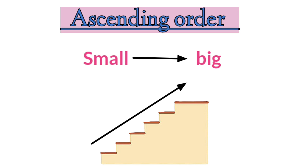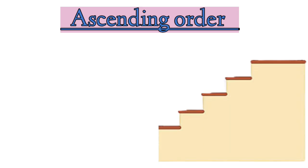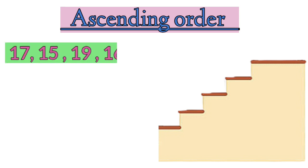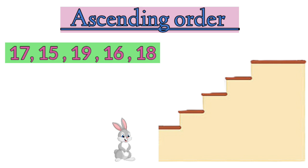Children, always remember that in ascending order the numbers always keep on increasing. Look at these numbers: 17, 15, 19, 16, 18. They are not in ascending order. Mr. Bunny wants to go up and get a carrot, but for that the numbers should be arranged in ascending order.